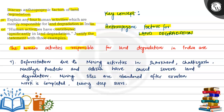The human activities responsible for land degradation in India are: first, deforestation due to mining activities, which have caused severe land degradation. Mining sites are abandoned after exploration work is completed, leaving deep scars. So the first reason is deforestation, which is due to mining activities.